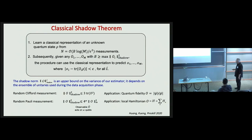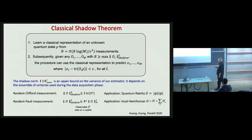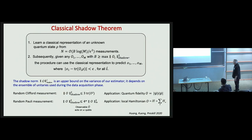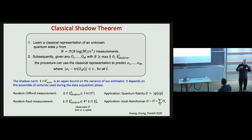Another case in which the shadow norm has a simple form is random Pauli measurement: for each one of the qubits, we decide uniformly at random to measure the Pauli operator X, Y, or Z. In that case the shadow norm is simply related to the spectral norm — the maximum eigenvalue of the observable — but it also has an exponential dependence on the weight of the operator, the number of qubits on which the operator acts non-trivially. For a local Hamiltonian that is a sum of constant-weight terms with polynomially many terms in N, with a number of shadows logarithmic in the system size we can get a good estimate of the expectation value of the Hamiltonian.